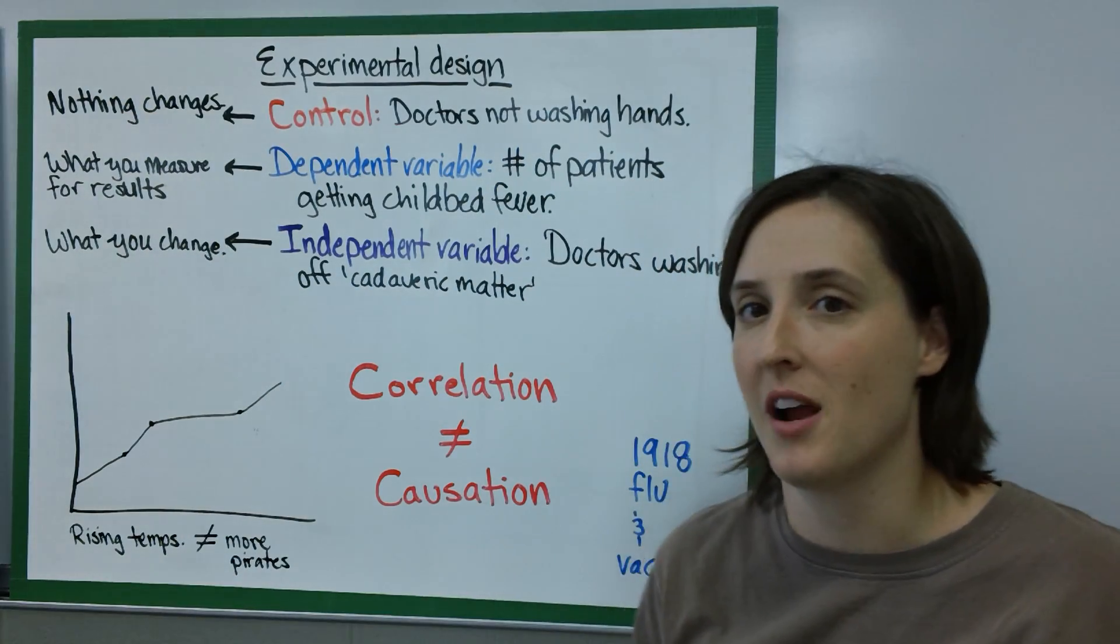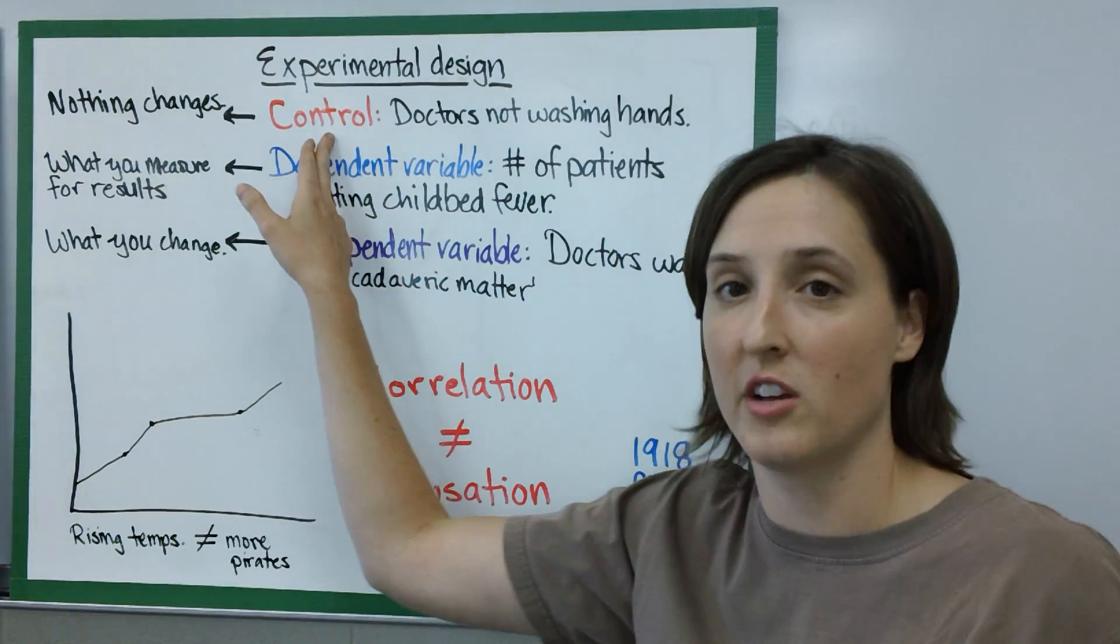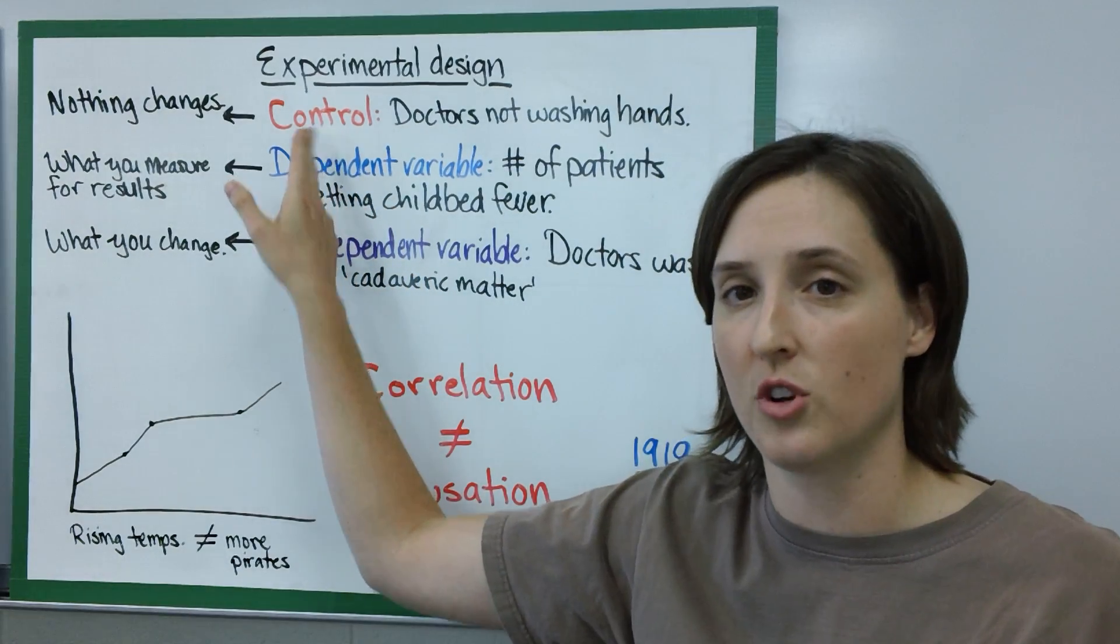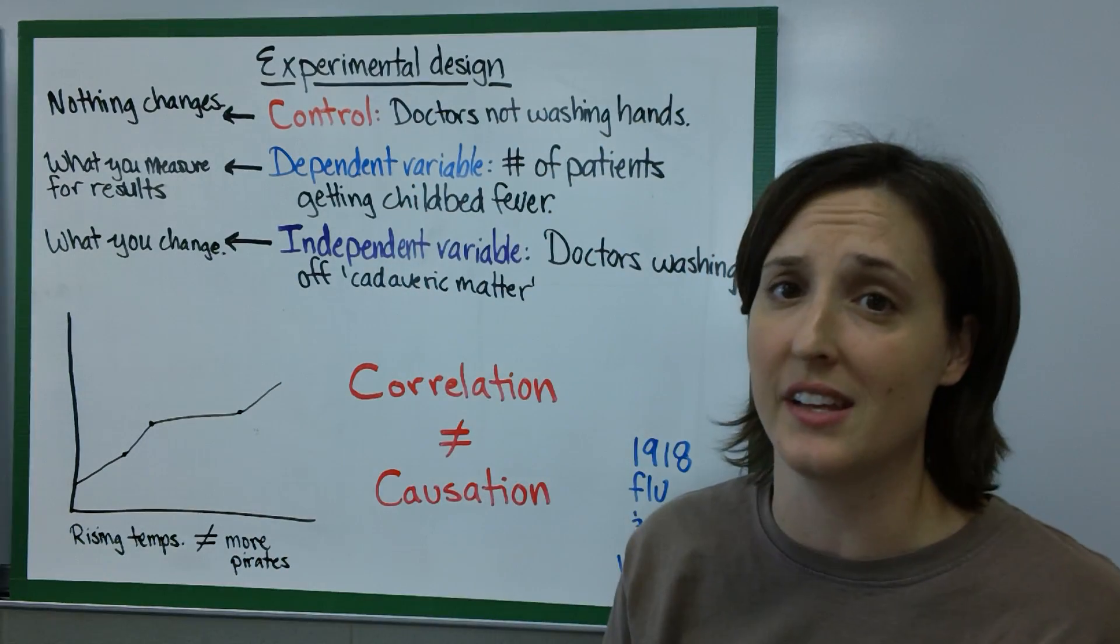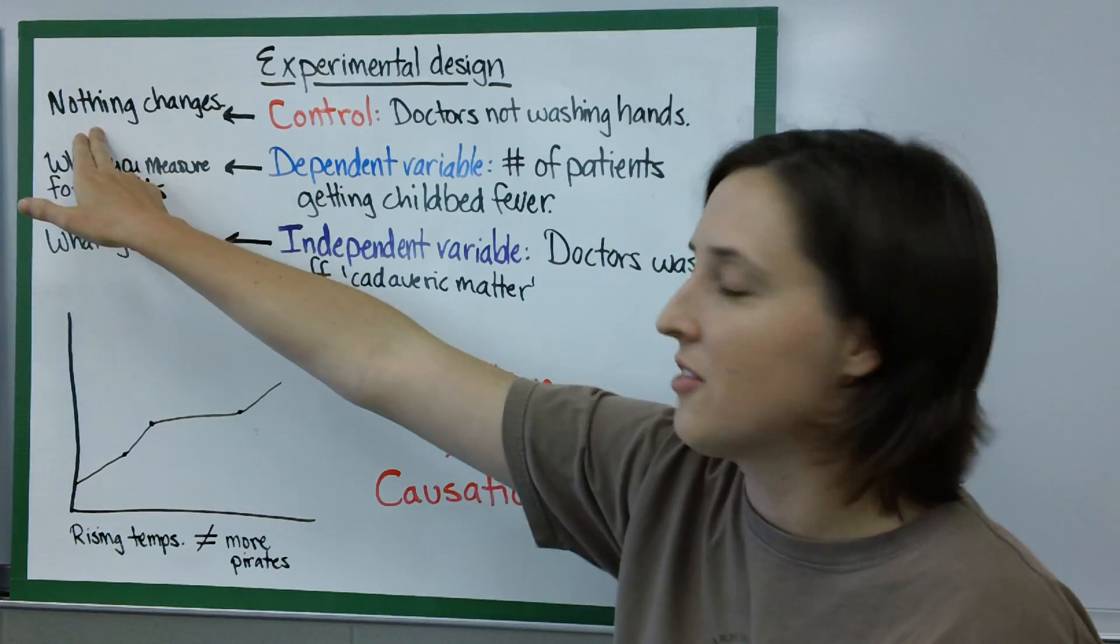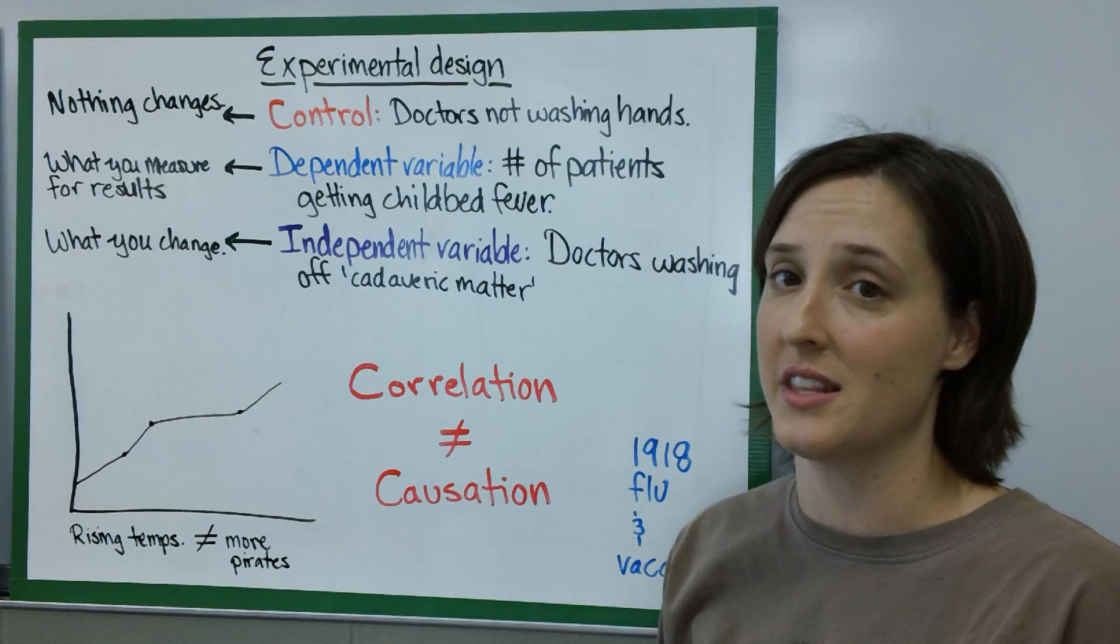In terms of setting up your experiment there's a couple of things you need to know. First, you need to know what a control is. A control is a group where nothing changes. In this experiment Semmelweis had some doctors not wash their hands. Nothing changed—the doctors were still doing autopsies and still coming and attending births.